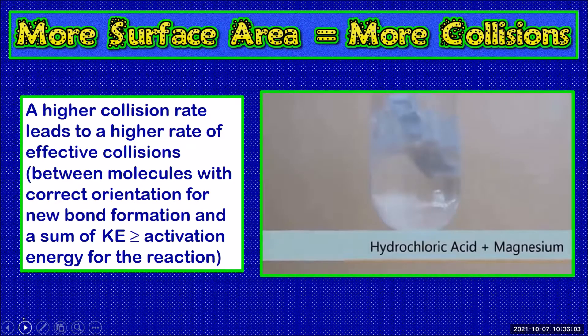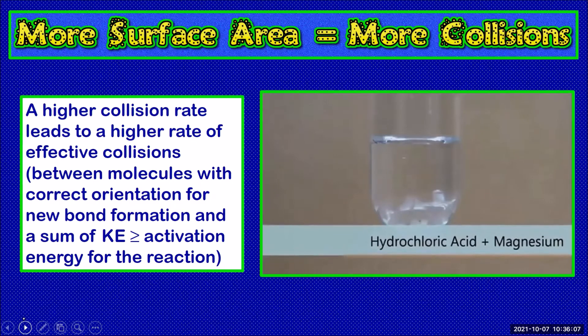Now we see a thin foil of magnesium reacting with the hydrochloric acid and we can see that the reaction is faster.